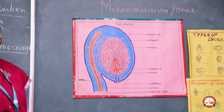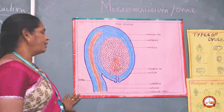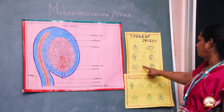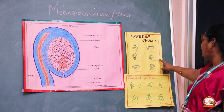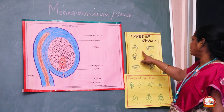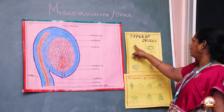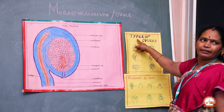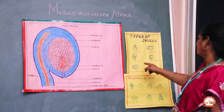This is about the types of ovules. The types are: orthotropous, anatropous, hemi-anatropous, campylotropous, amphitropous, and circinotropous. In orthotropous, the funicle, the micropyle, and the chalaza are all in a straight line. It is very common in all angiosperms.